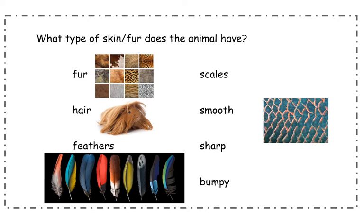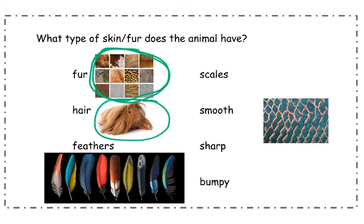The next question is, what type of skin or fur does the animal have? Lots of animals have fur, and here are some pictures of different kinds of fur. Some animals also have hair. One of the main differences between fur and hair is that hair, like the hair on our head, just keeps growing. For a dog with hair, you have to take your dog to get their hair cut. Fur usually stays one length — it will just fall off and then they'll grow new fur. They shed while their new fur is growing in.